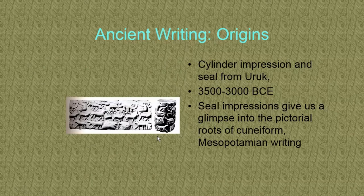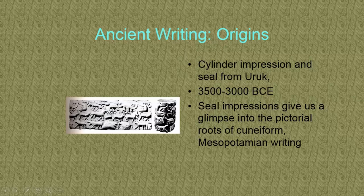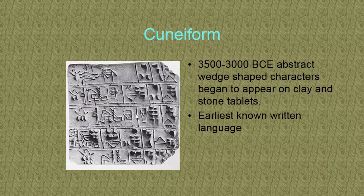Here's a cylinder seal impression from Uruk. On the right side of the picture you see a little round cylinder — like a thermos — and to the left is what it looks like if you could unwrap the cylinder and make it flat. They would take these seals, put a piece of wax down, and roll the cylinder seal along the wax to make an impression, which would seal important writings or documents. If you were a merchant with many jars of olive oil, all your jars would be sealed with your particular seal so everybody would know those jars of olive oil belonged to you.